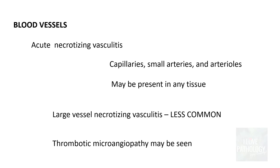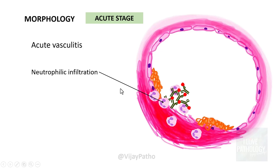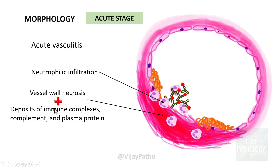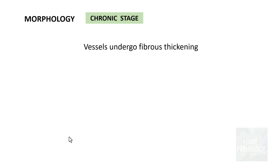You can at times see thrombotic microangiopathy. Morphological features in the acute stage include neutrophilic infiltration in the vessel wall along with necrosis of the vessel wall. This vessel wall necrosis combined with deposits of immune complexes, complement, and plasma proteins results in a smudgy eosinophilic area of tissue destruction referred to as fibrinoid necrosis. In the chronic stage, blood vessels undergo fibrous thickening causing significant narrowing of the lumen.